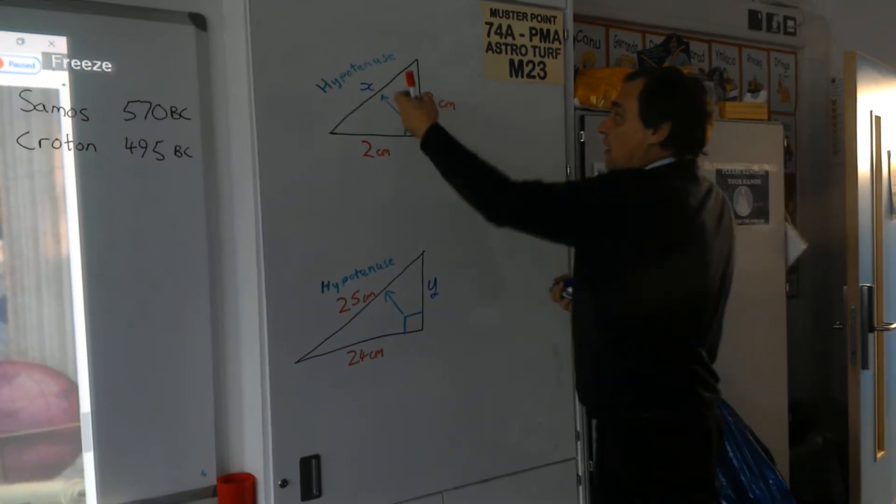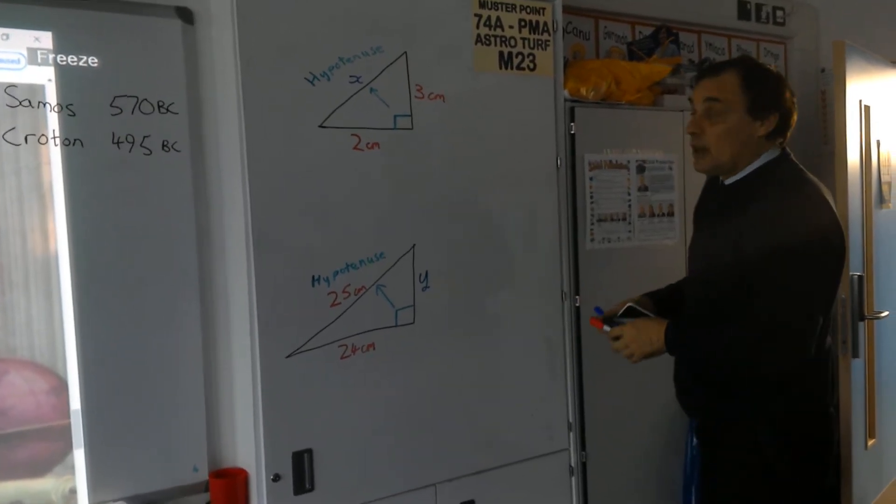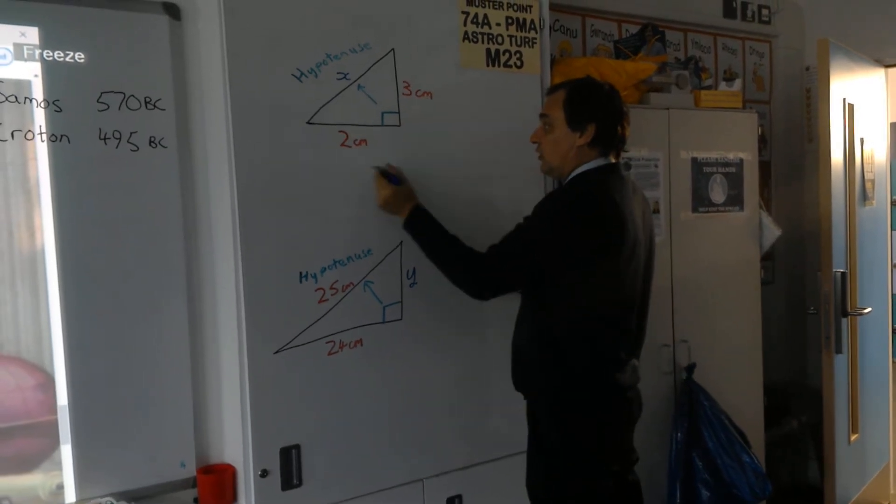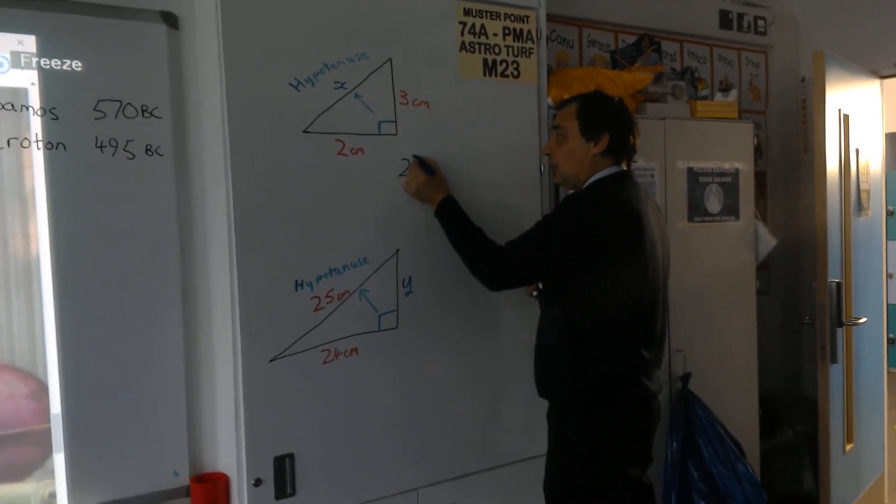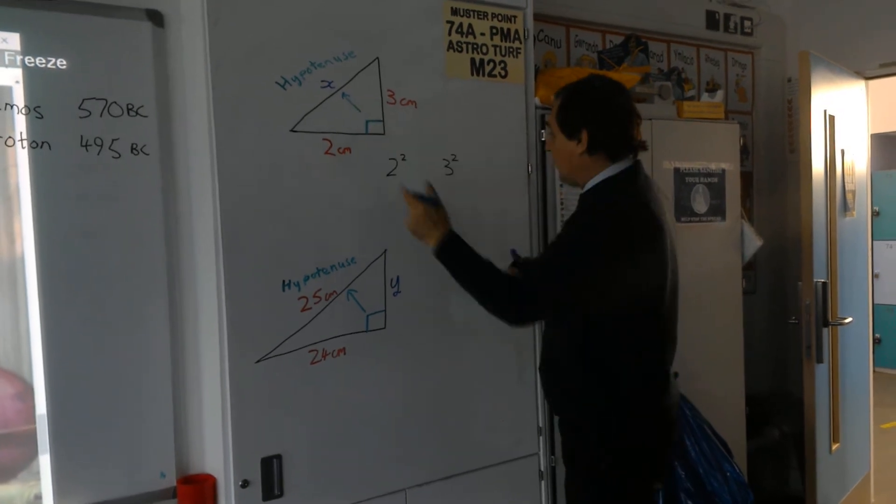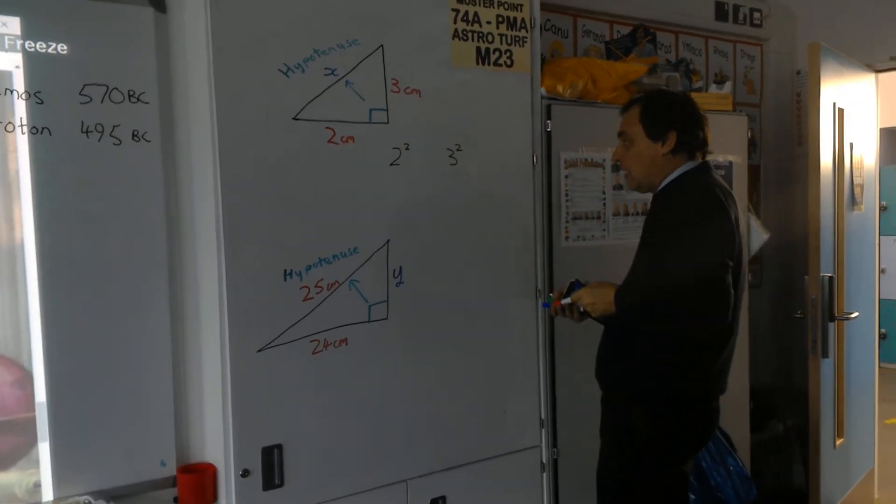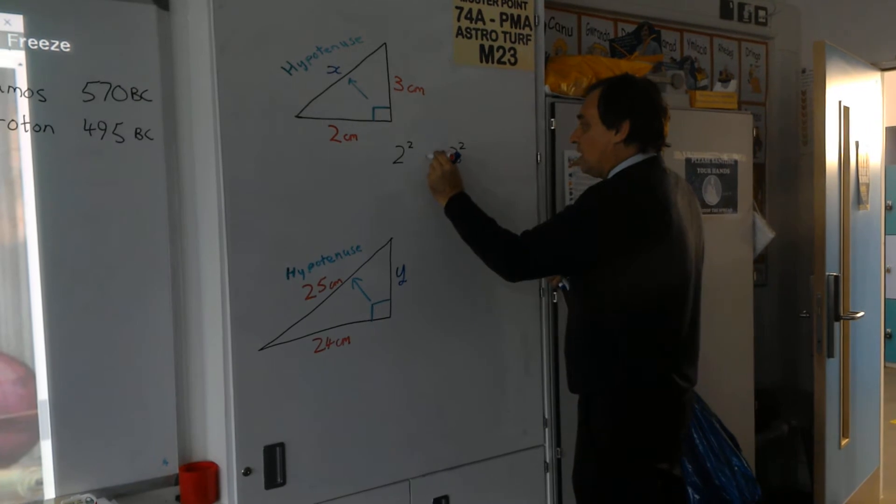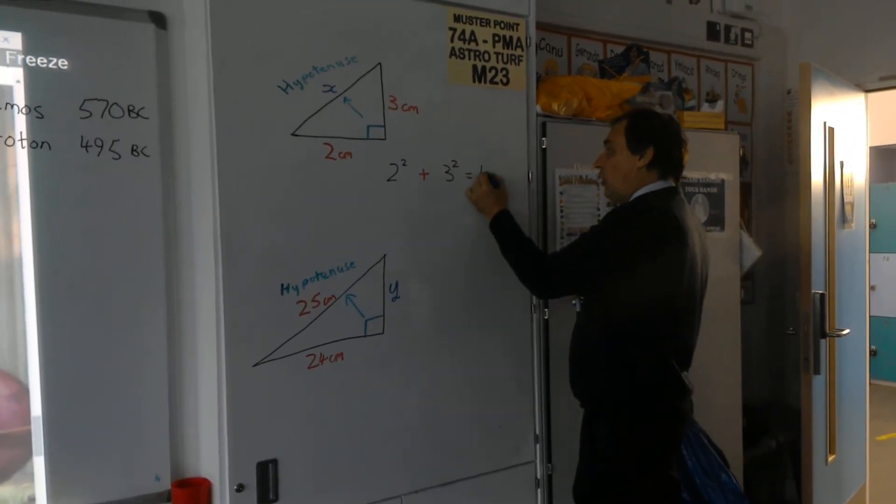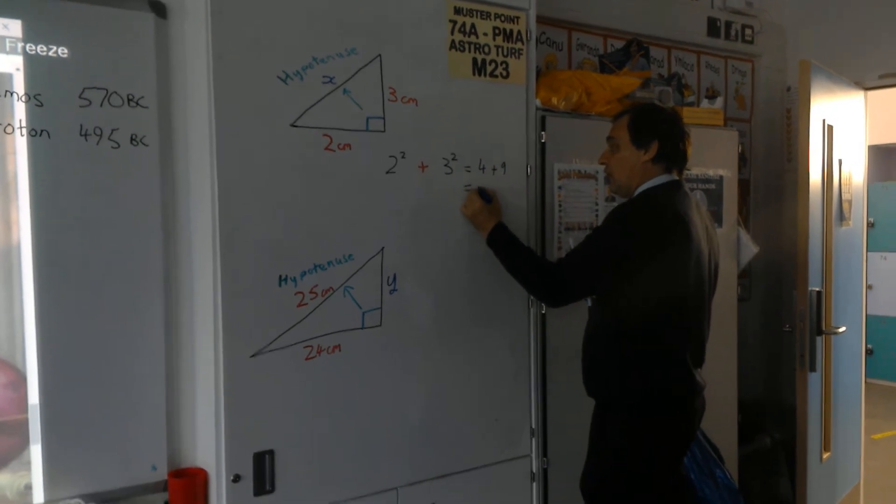So if I wanted to find the length of this hypotenuse here, and it's labelled x, what I would do is I'd square my two sides, so I'd square the 2, I'd square the 3, I'd add them together because I'm finding the longest side, and I'll put that in red, that add sign. That would give me 4 plus 9, which is 13.